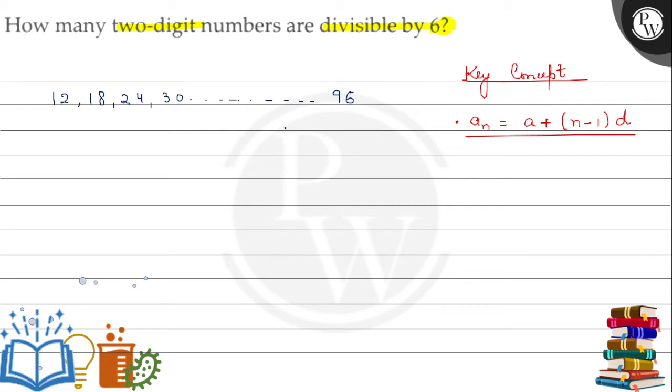Here, the first term which we call a1 is 12. The common difference is 6, which is the number by which the sequence increases. And the last term l is 96. Using the formula, we will calculate it.